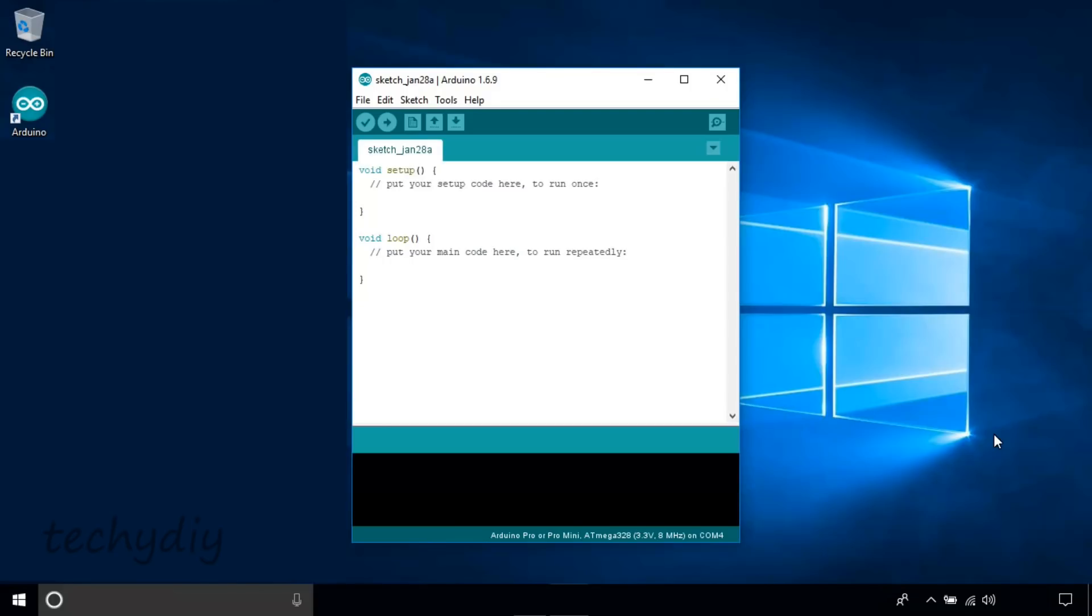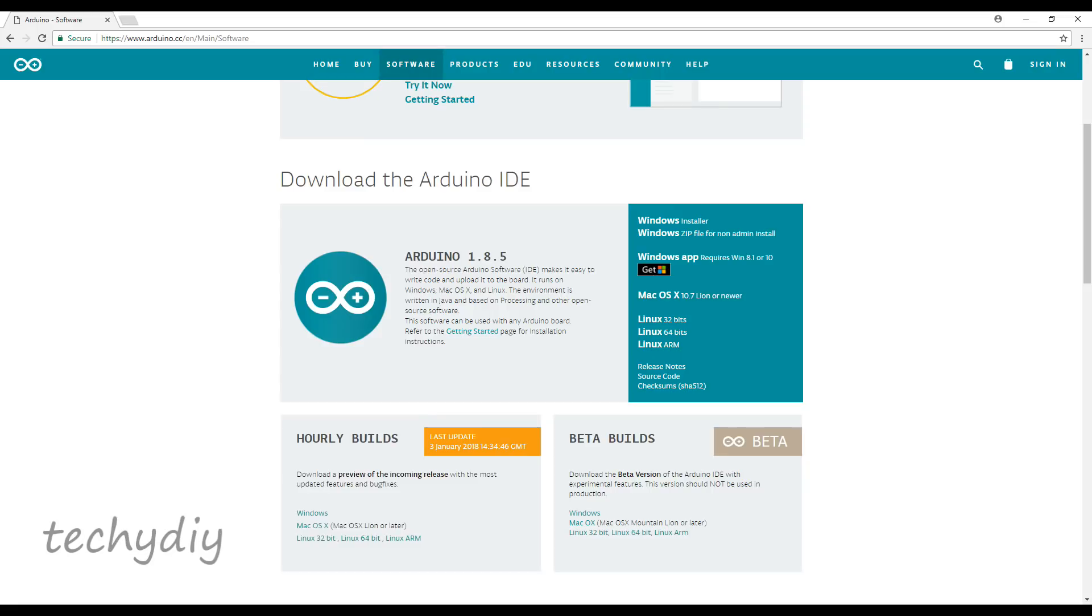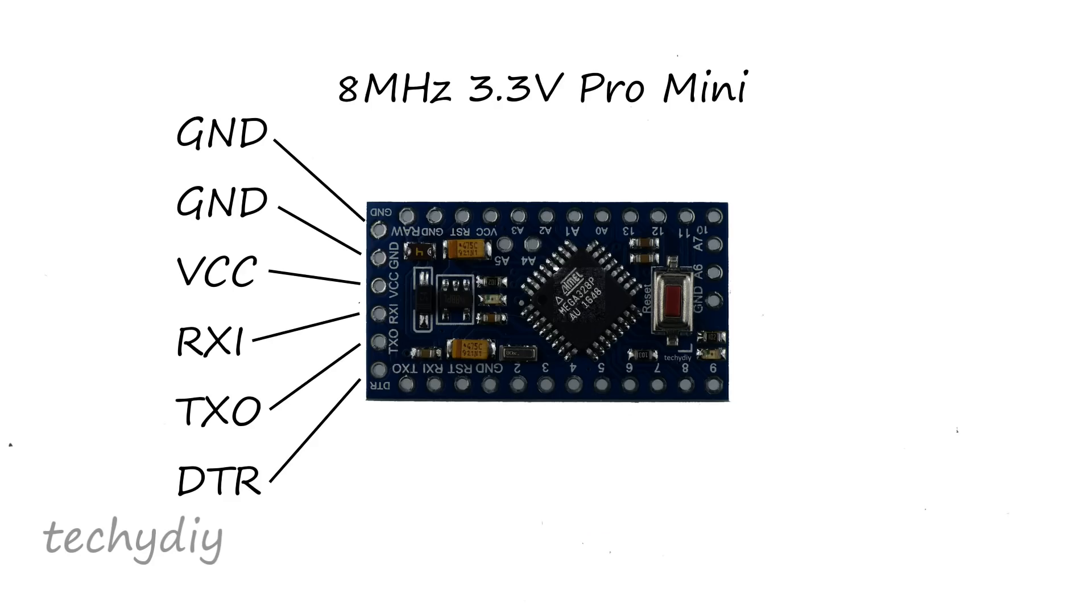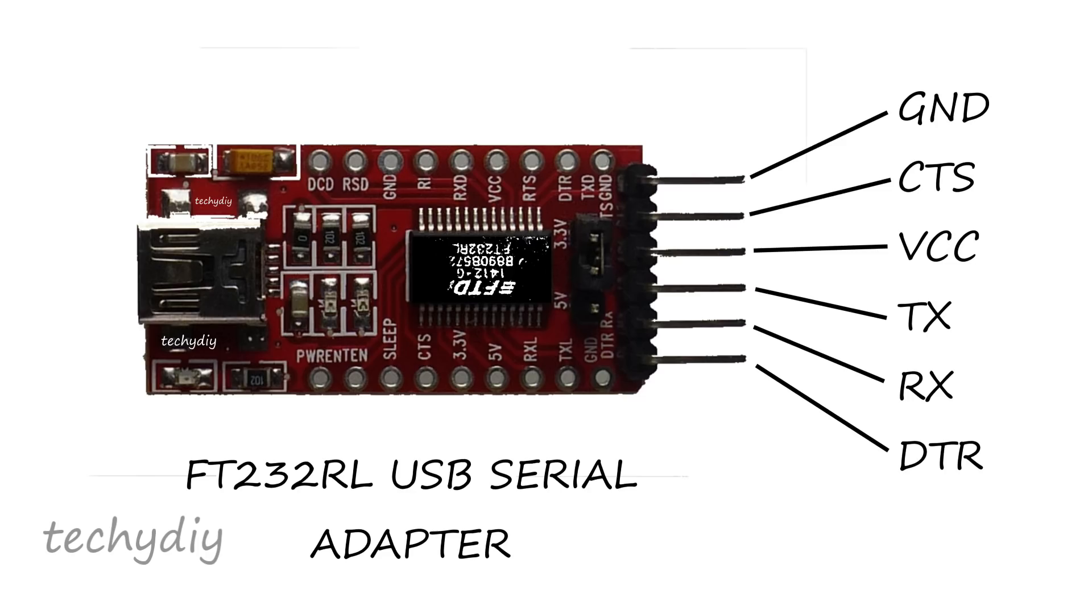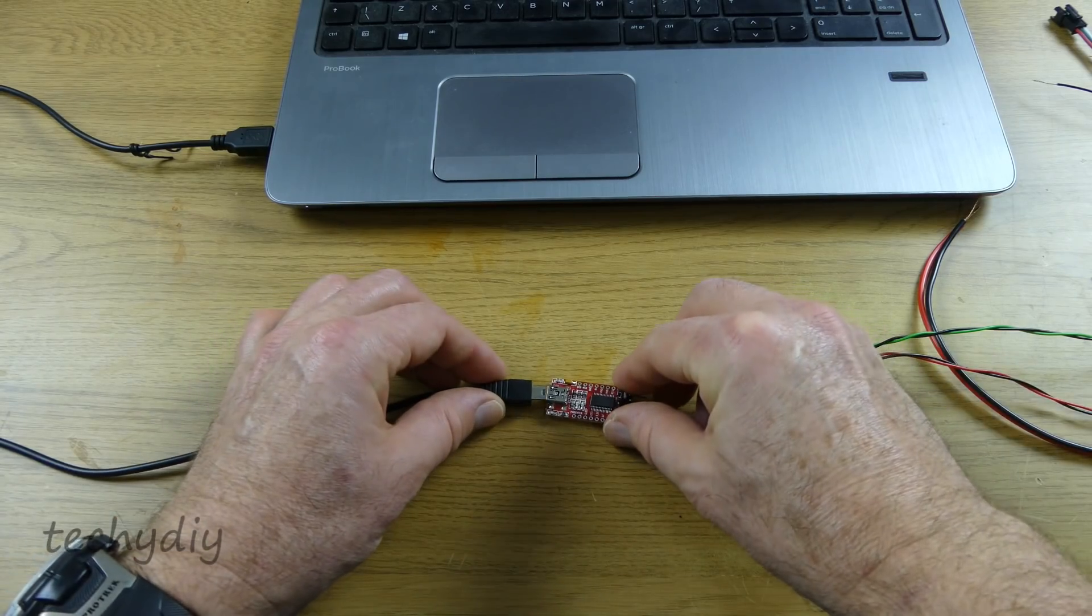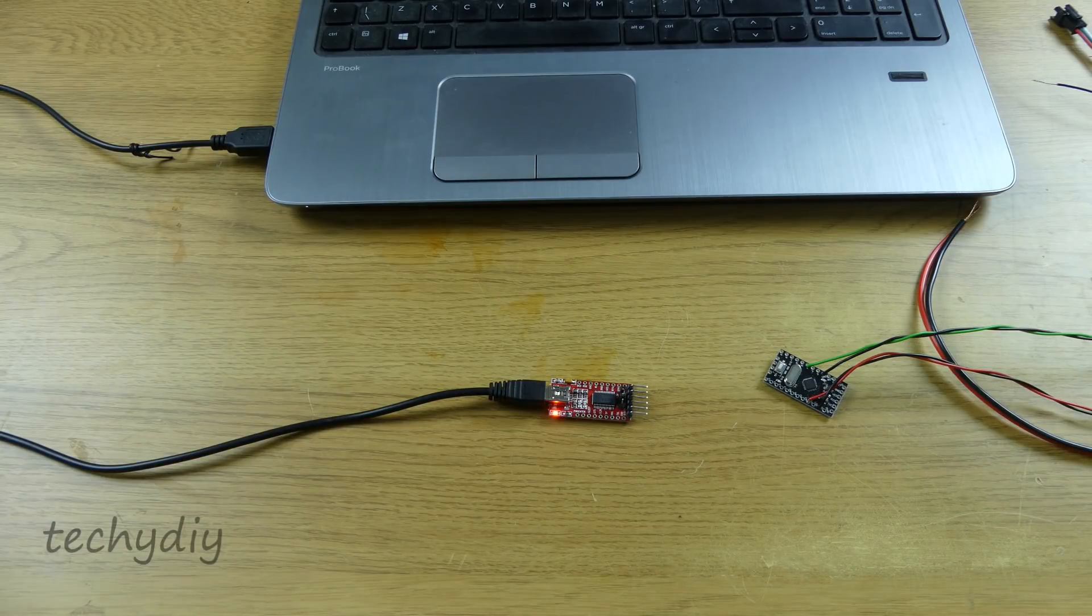To program the Pro Mini, the Arduino IDE software is used. I'll put a link to a video on how to install that in the description. The Pro Mini doesn't have an onboard USB port like the Arduino Uno. So to program it, an FTDI232 USB to serial adapter is used. This is plugged into a USB port on the computer and the adapter pins are connected to the Pro Mini.